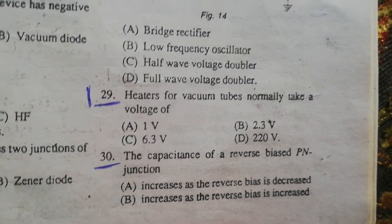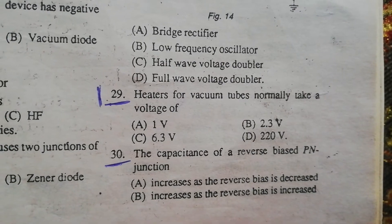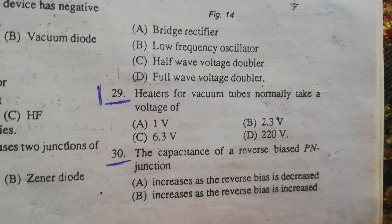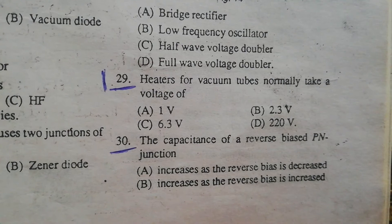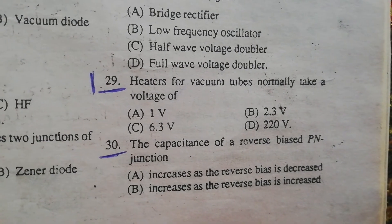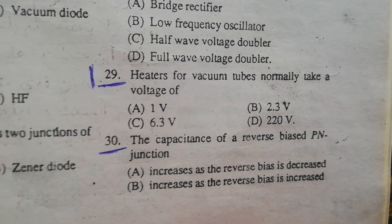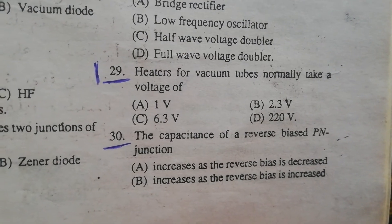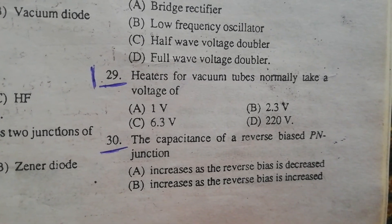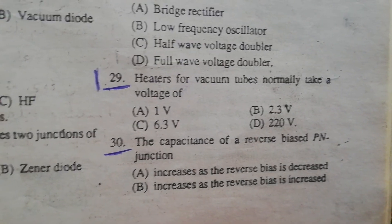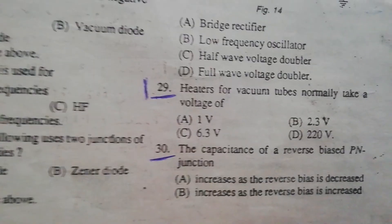We have heaters for vacuum tubes that normally take a voltage of 6.3 volts. Regarding the capacitance of a reverse-biased PN junction — it has an inverse relationship. When the reverse bias is reduced, the capacitance will increase. So option A is the correct option.